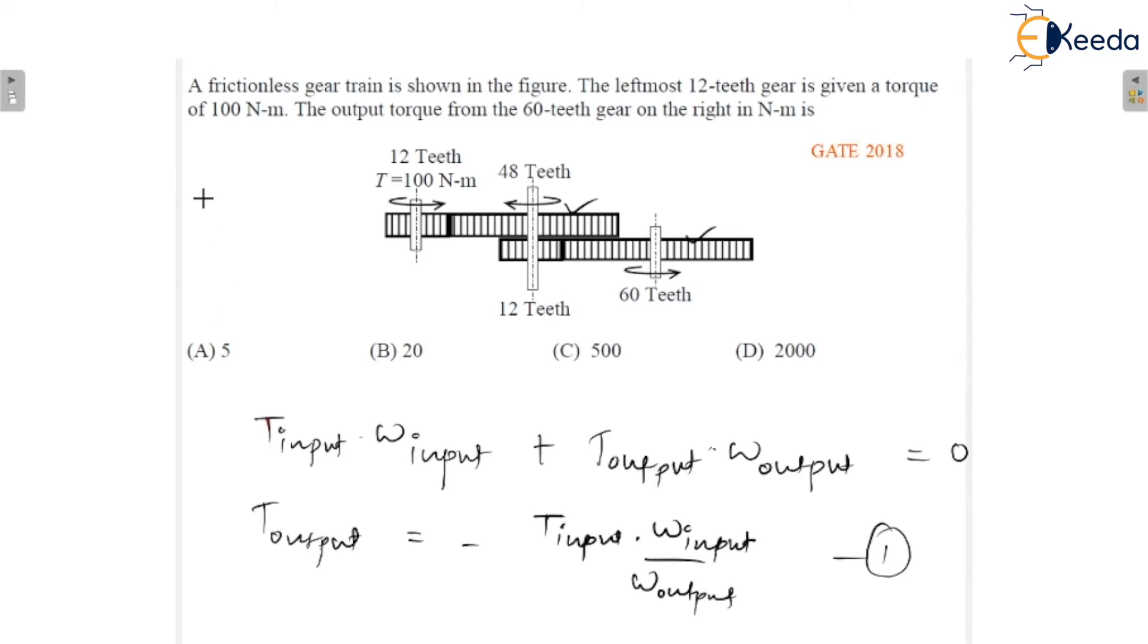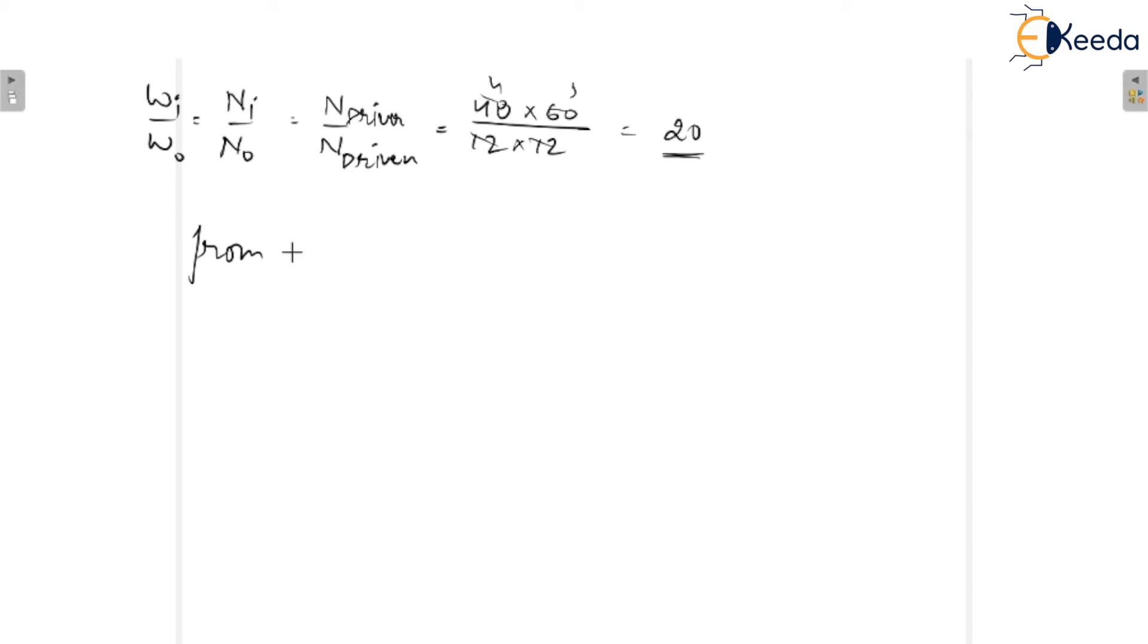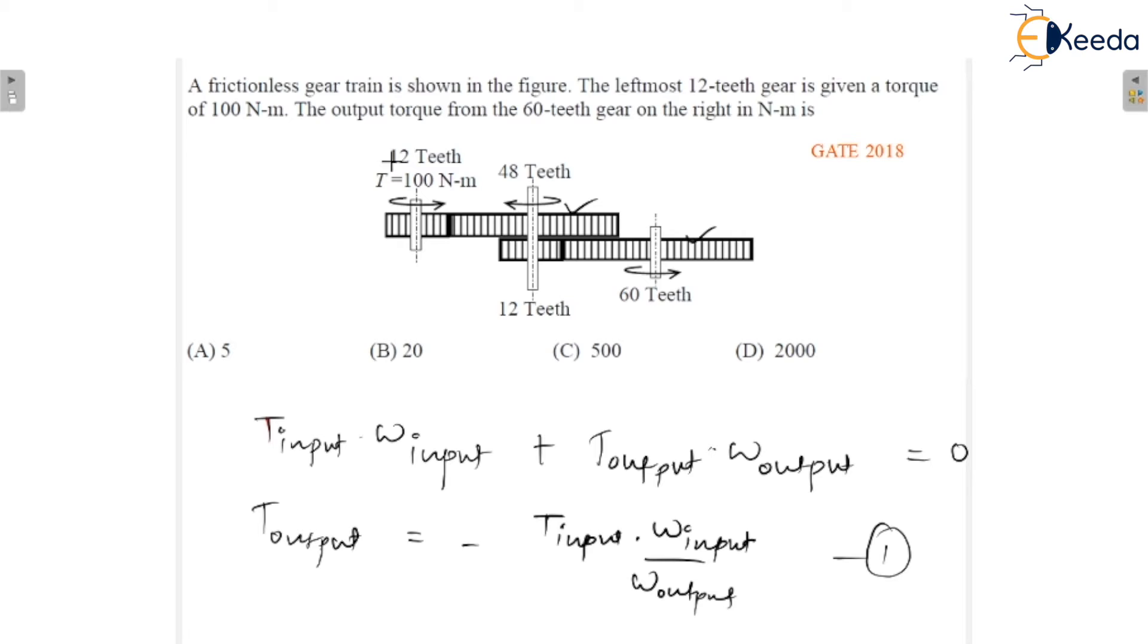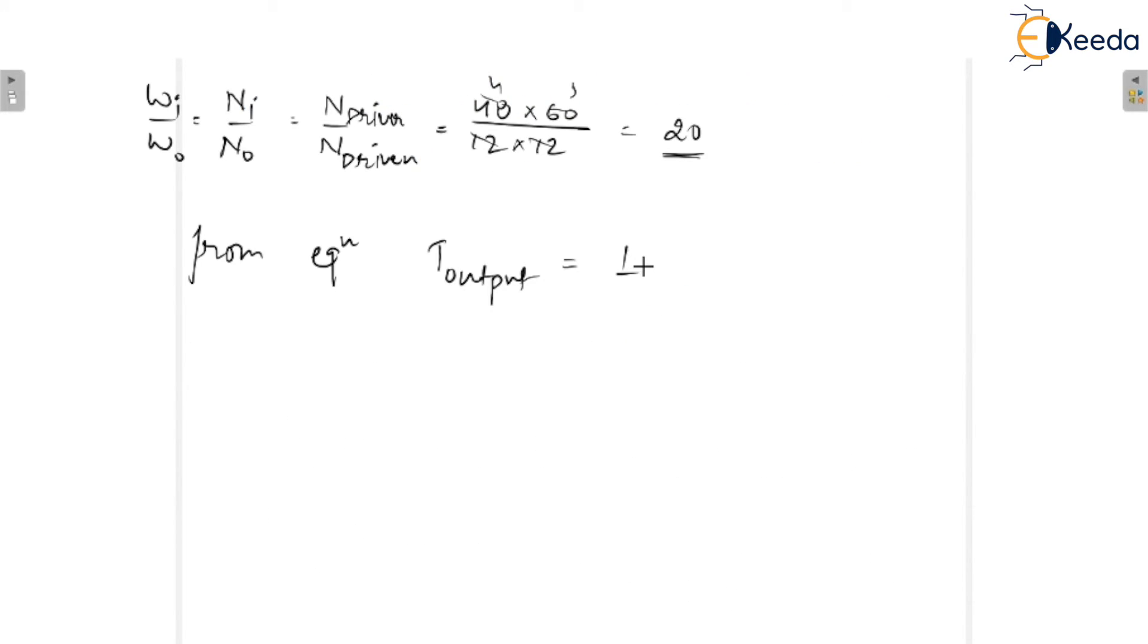So, we have to put the value in equation number 1. From equation number 1, output torque: input torque is 100 Nm, so 100 Nm multiplied by 20, so it becomes minus 2000 Nm.